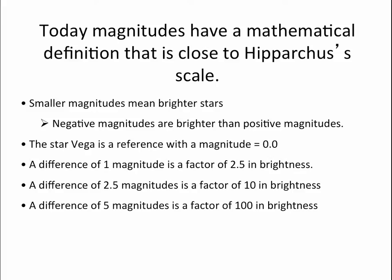Astronomers have adapted this scale. It was used for thousands of years, so it's been adapted to modern usage. Because we like to have a mathematical description, we've kept the idea that smaller magnitudes mean brighter stars. But we've also realized that one was not good enough — there were stars brighter than a one on our new scale. So we've added zero and then negative numbers, and a negative number is brighter than a positive number. The more negative it gets, so like a minus ten, is brighter than a minus one.